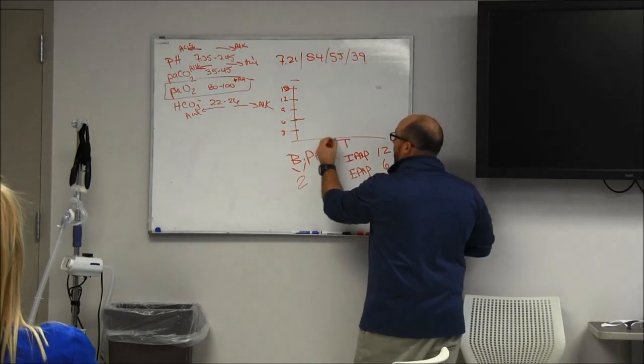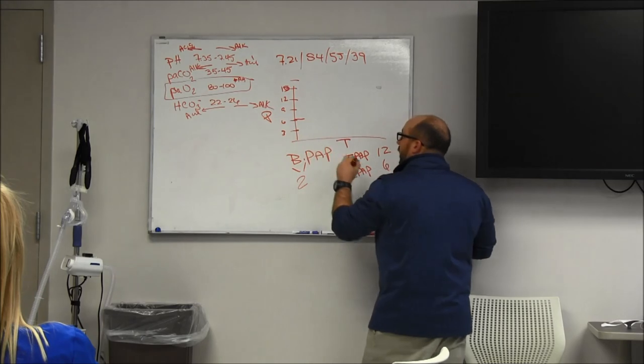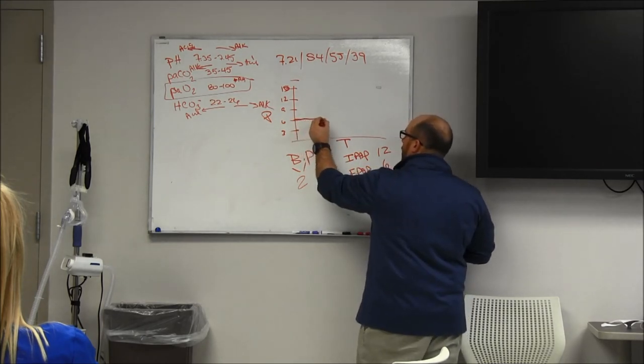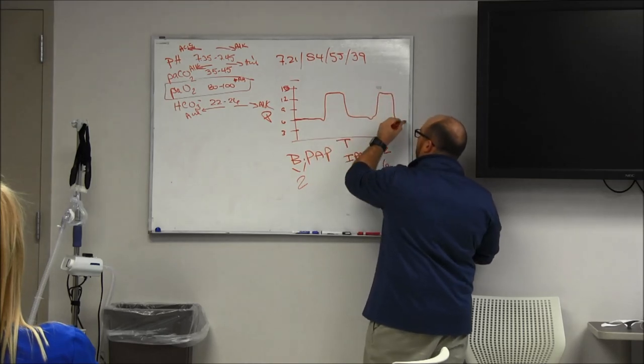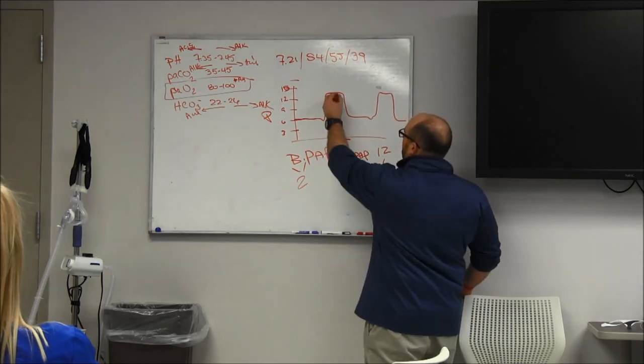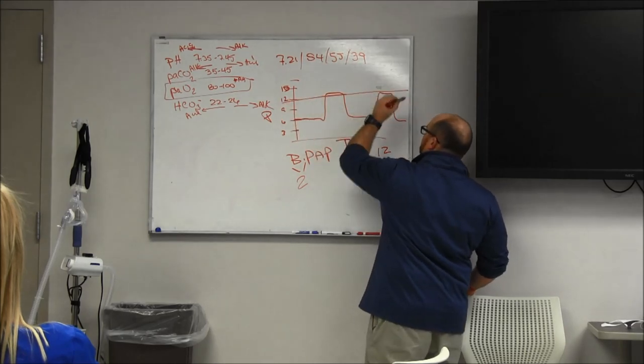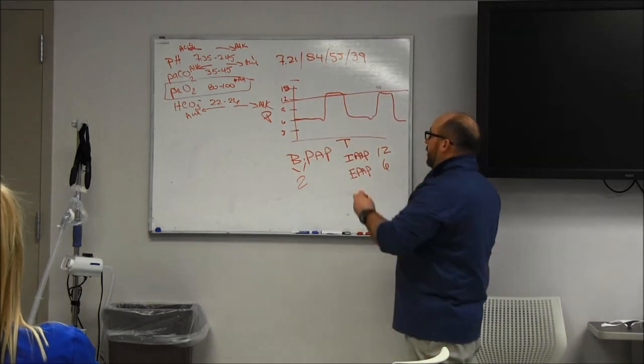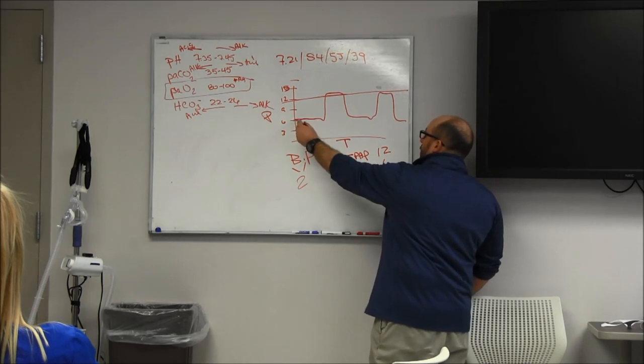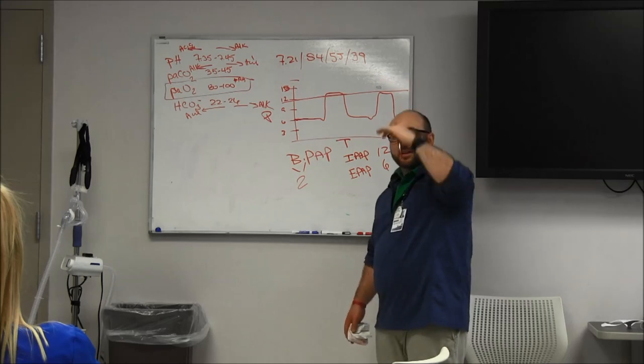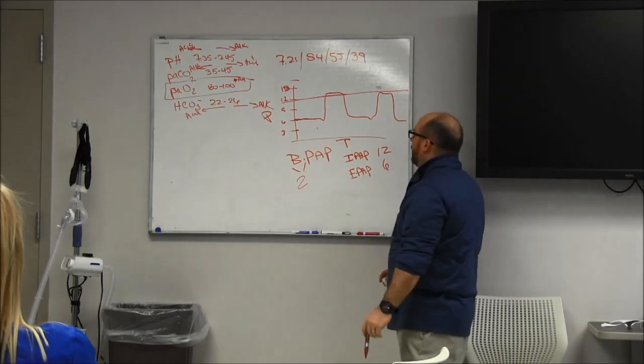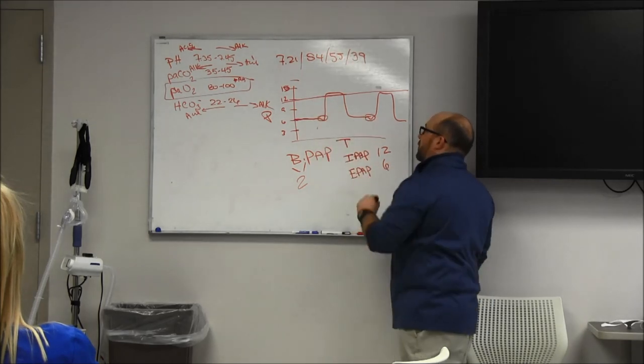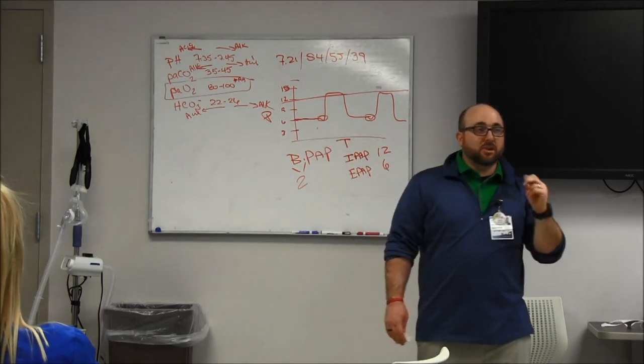This is like time and this is pressure. On our BiPAP, the waveform is going to look like this. It should be going up to about 12. Breathe in normal, start a breath, it's going to fluctuate the pressure up to 12, come back down. They're breathing against the six. What do you think this little blib in the pressure waveform is? That's them starting a breath.